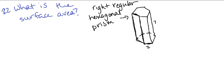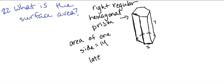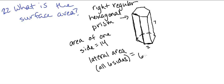The area of the rectangle is width times height, so that's 2 times 7 which is 14. The area of one side is equal to 14. Therefore, the lateral area — the area of all six sides — is equal to 6 times 14, which is 84.